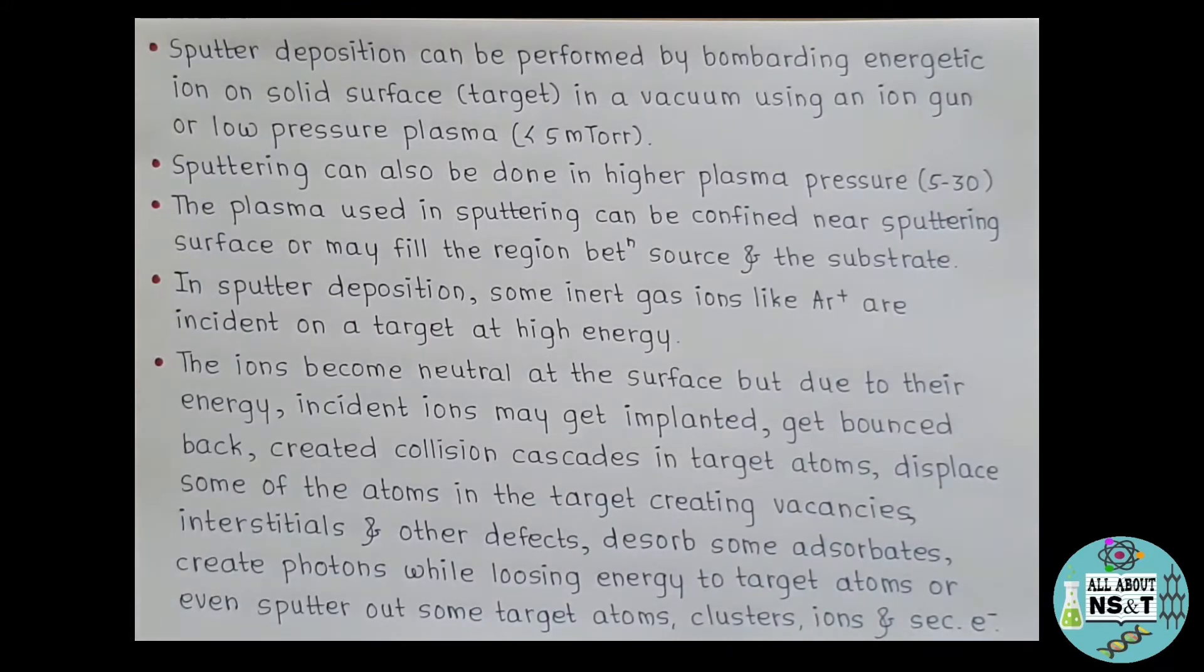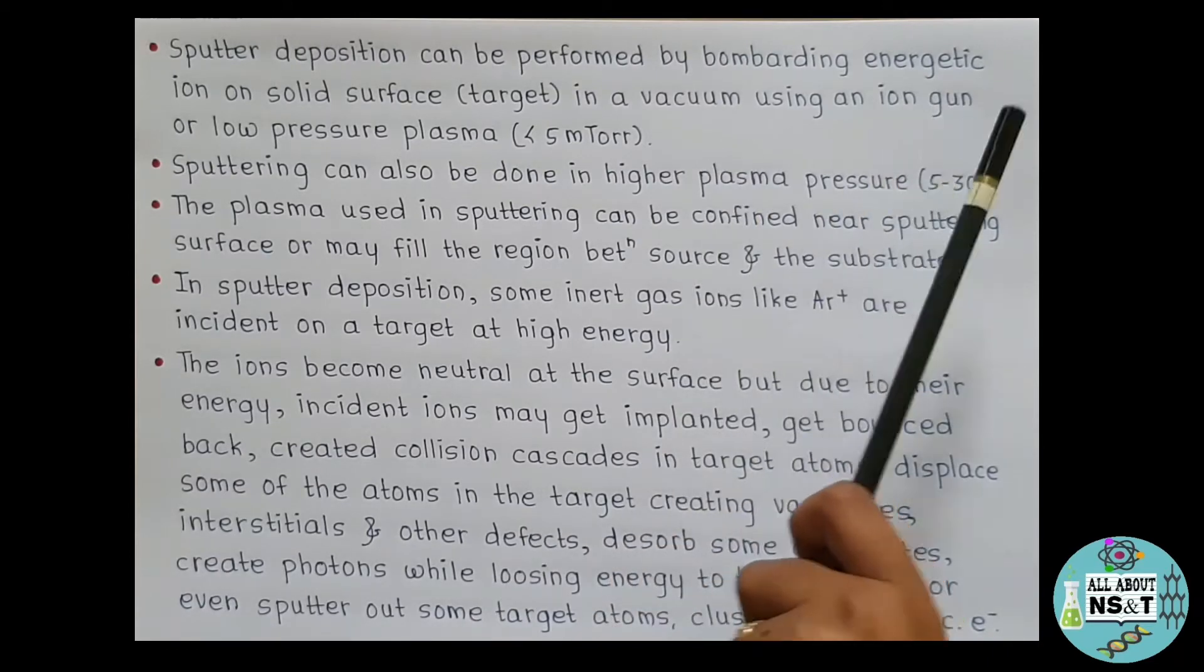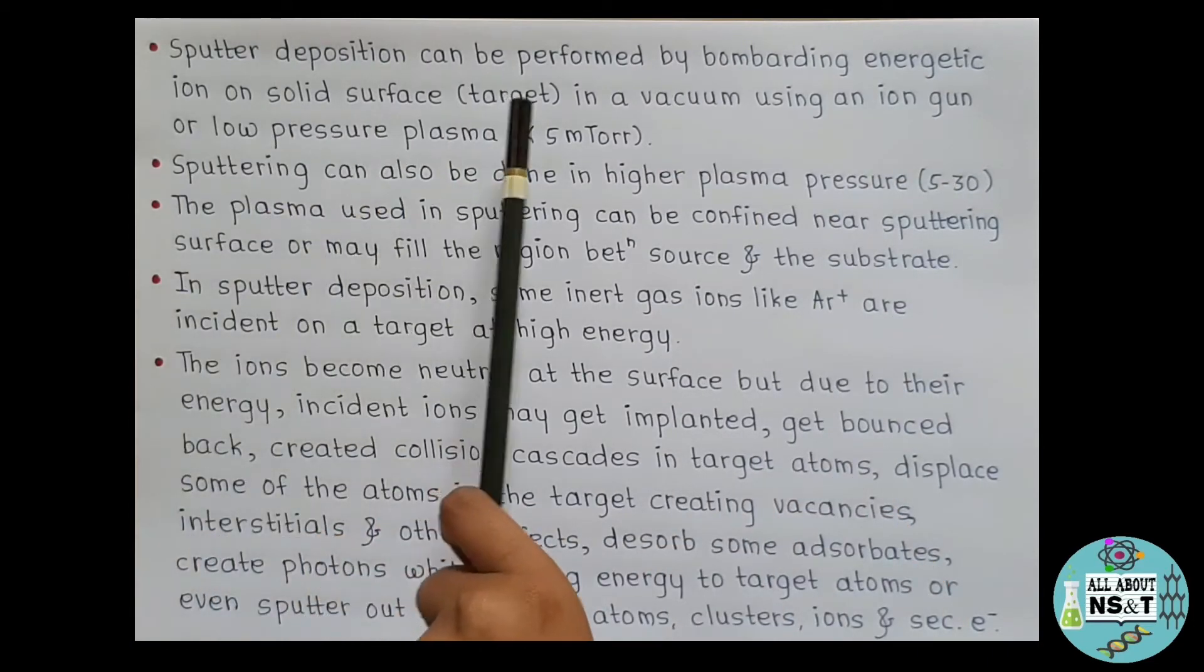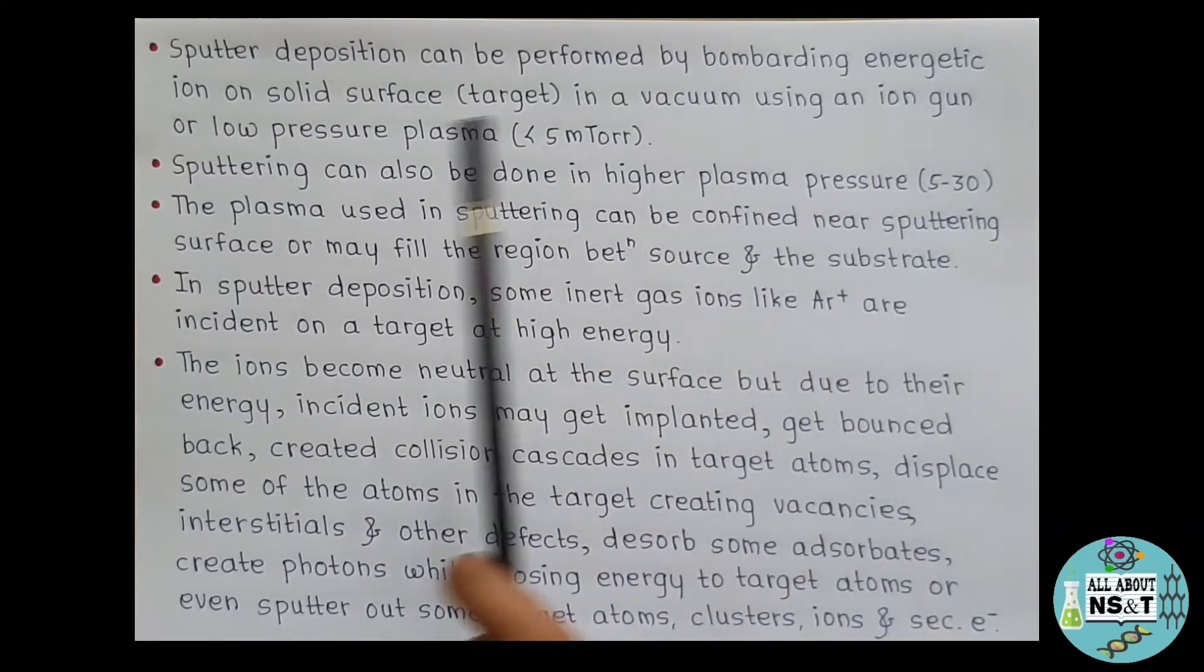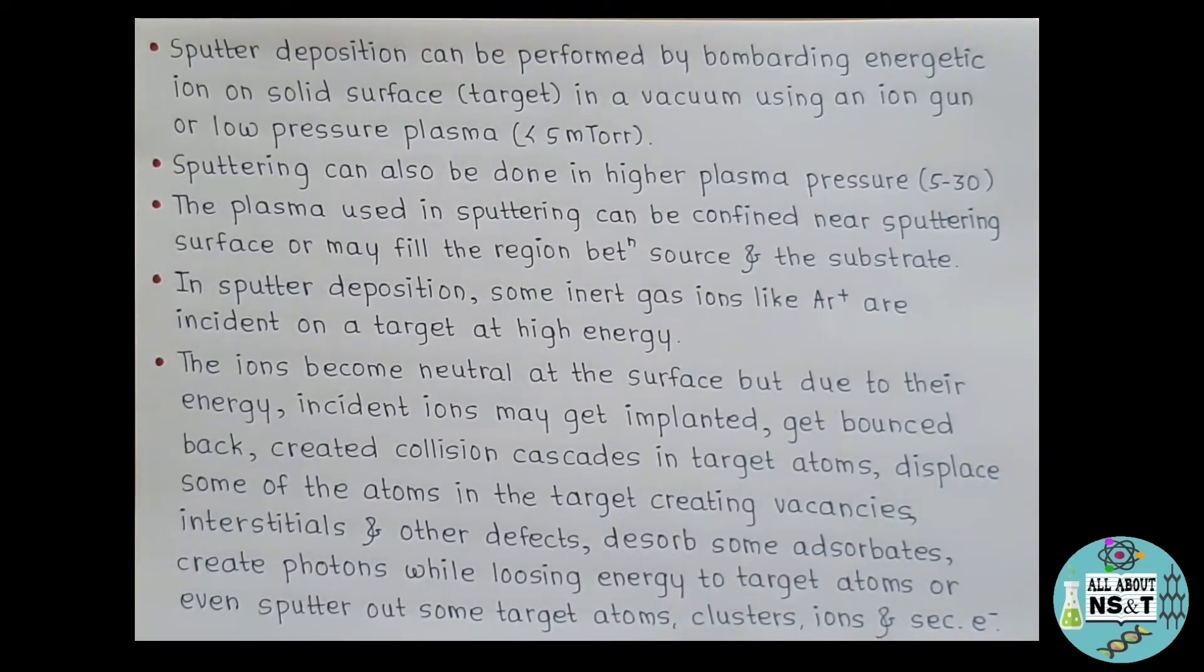Sputter deposition can be performed by bombarding energetic ion on a solid surface as its target in vacuum using an ion gun or low pressure plasma. In this case, as the process is carried out in vacuum, the sputtered particles suffer few or no gas collisions in the space between the target and the substrate. Sputtering can also be done in higher plasma pressure, that is in pressure range between 5 to 30 millitorr.